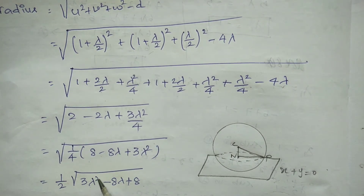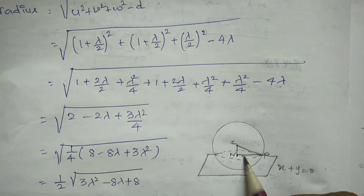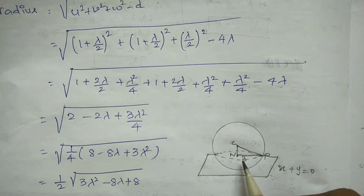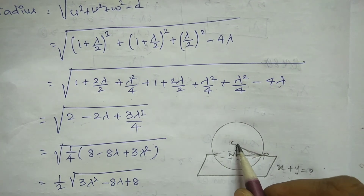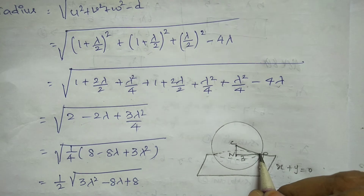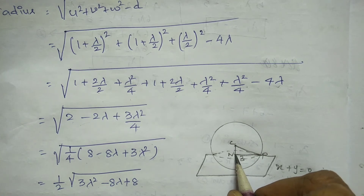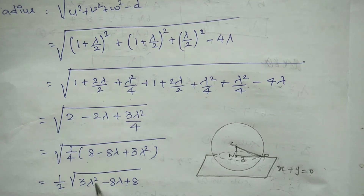The required sphere intersects the plane x + y = 0 in a circle of radius 3 units. Let C be the center of the sphere and P be any point on the circle. N is the foot of the perpendicular from C to the plane x + y = 0. We have sphere radius CP, distance CN, and circle radius NP = 3.